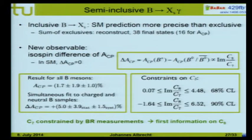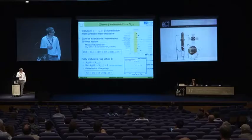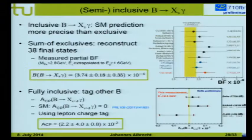The first experimental constraints on C8 are set. The Belle collaboration also measured semi-inclusive B→Xsγ in 38 final states, finding a branching fraction of 3.74 × 10⁻⁴, in nice agreement with the standard model. The CP asymmetry is also found consistent with the standard model prediction of zero.